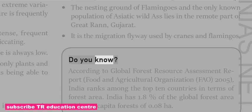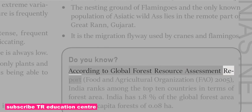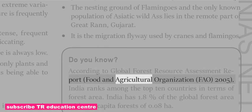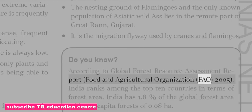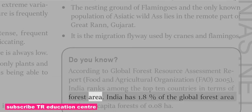According to the Global Forest Resource Assessment Report of the Food and Agricultural Organization (FAO), 2005, India ranks among the top 10 countries in terms of forest area, with 1.8% of the global forest area and per capita forests of 0.08 hectares.